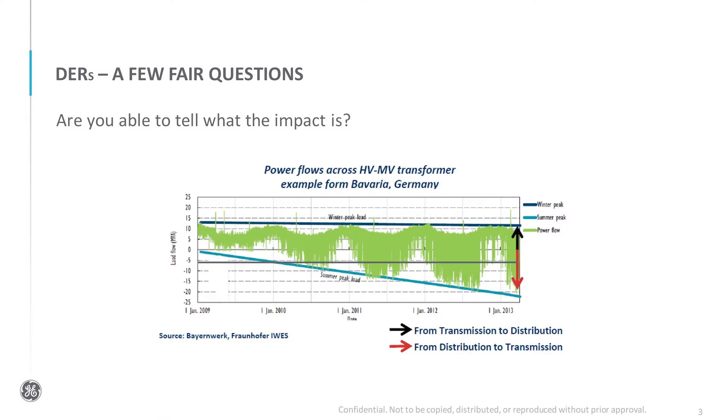Now the second step is: what are these DERs causing on the grid? The impacts are known. At the distribution level, it's back feeds and voltage troubles. At the transmission level, it's balancing issues. And this will come at the interface between transmission and distribution, so you need to coordinate with your TSO.